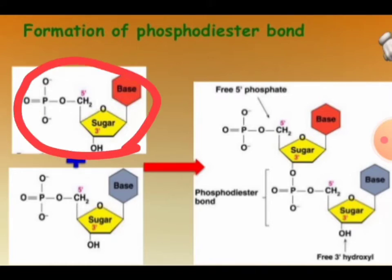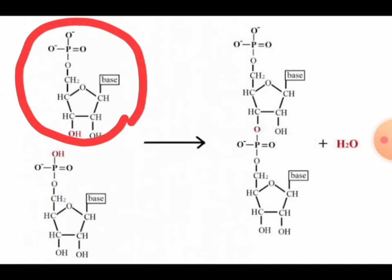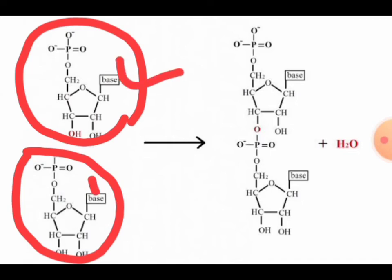These nucleotides are found in nucleic acids like DNA and RNA. Both DNA and RNA are polynucleotide strands, where you can find the formation of phosphodiester bonds between one nucleotide and another.